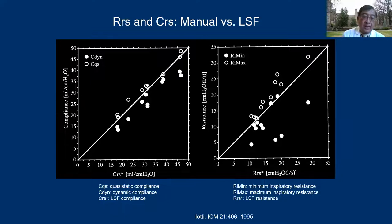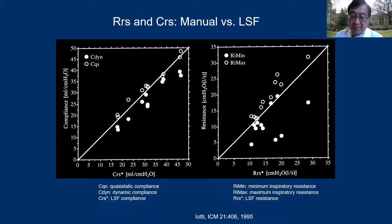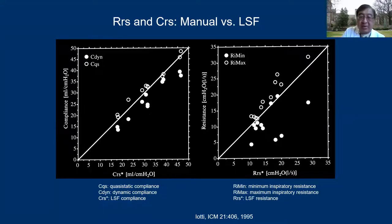Comparing compliance measured by least-squares methods versus manual measurements shows they are actually quite good. Dynamic compliance and quasi-static compliance are not too bad. However, resistance has more scatter — it can underestimate or overestimate more significantly. The numbers are numbers, but if they are not reliable, they give you the wrong results. It's important to know the limitations of these continuous automated measurements.